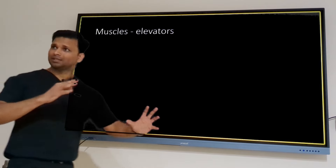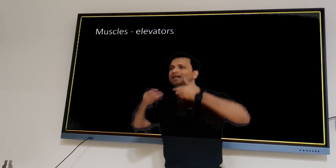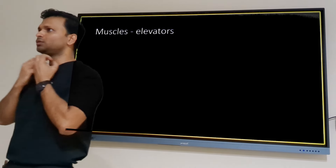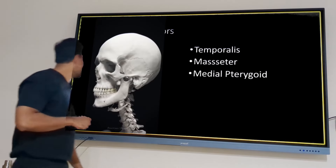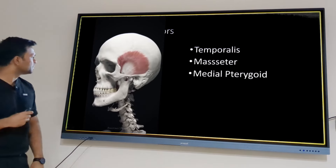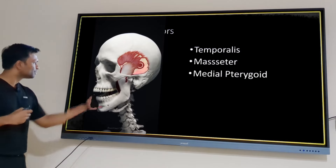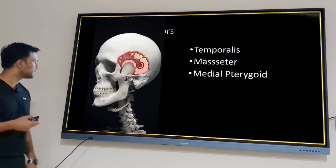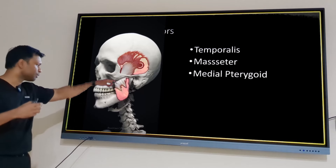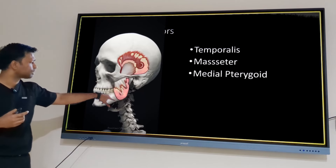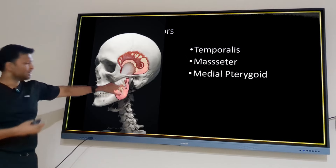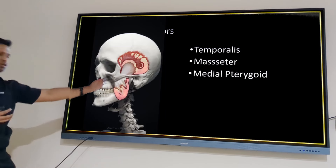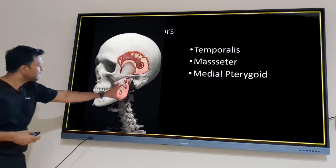There are two muscle groups: elevators that close the mandible, and depressors that open it. Among the elevators we have three muscles — temporalis, masseter, and medial pterygoid. Looking at the animation: the temporalis contracts and closes the mandible. The masseter arises from the zygomatic bone and arch, inserts into the inferior border of the mandible and posterior surface of the ramus, pulling the mandible upward to close the mouth.